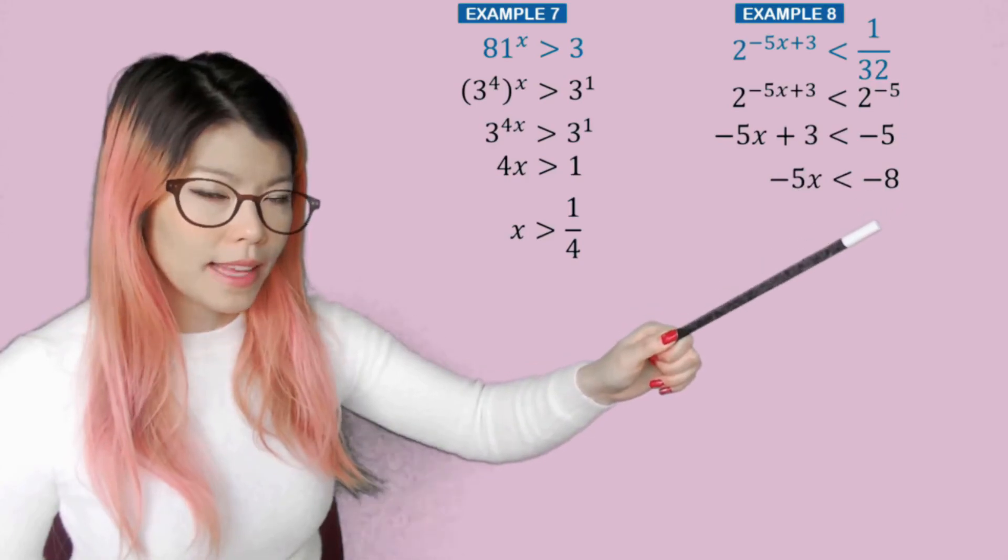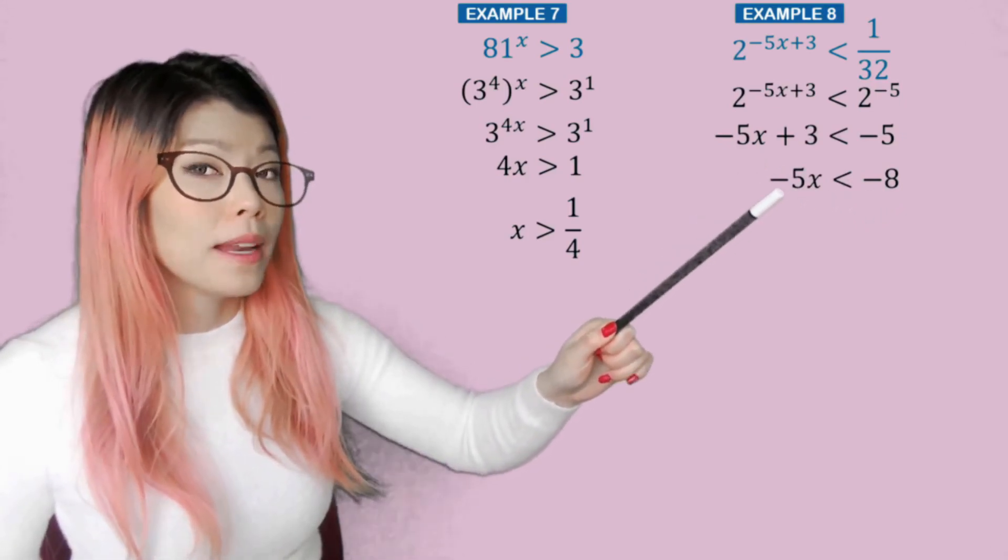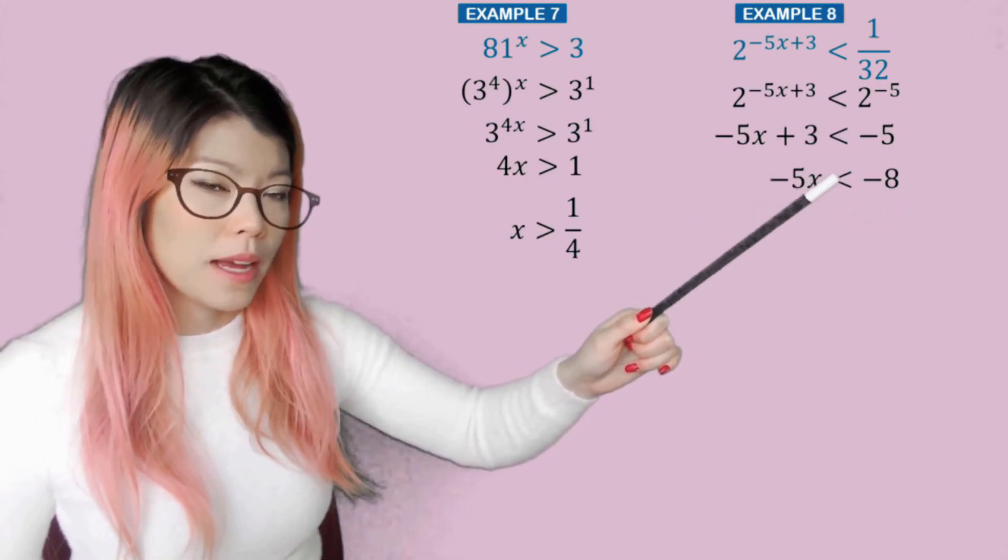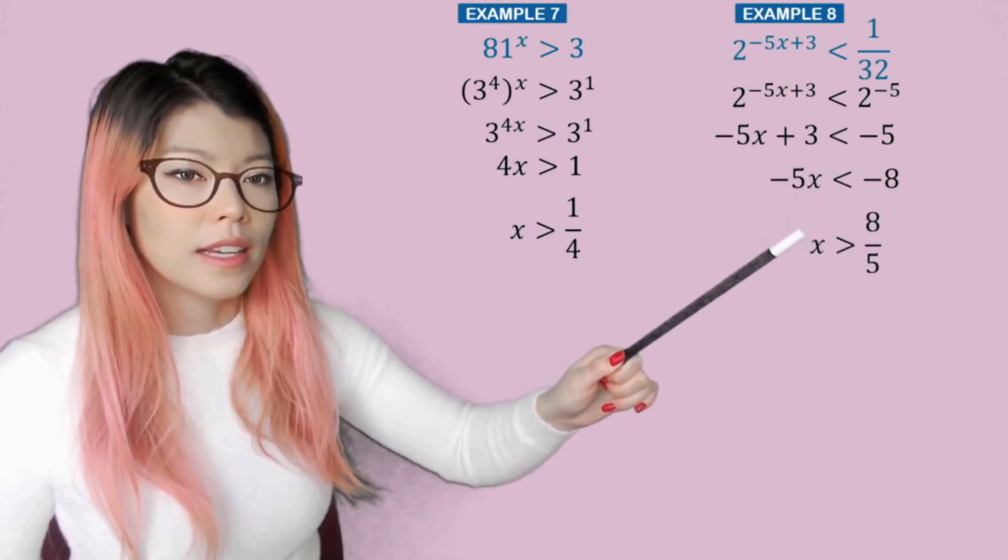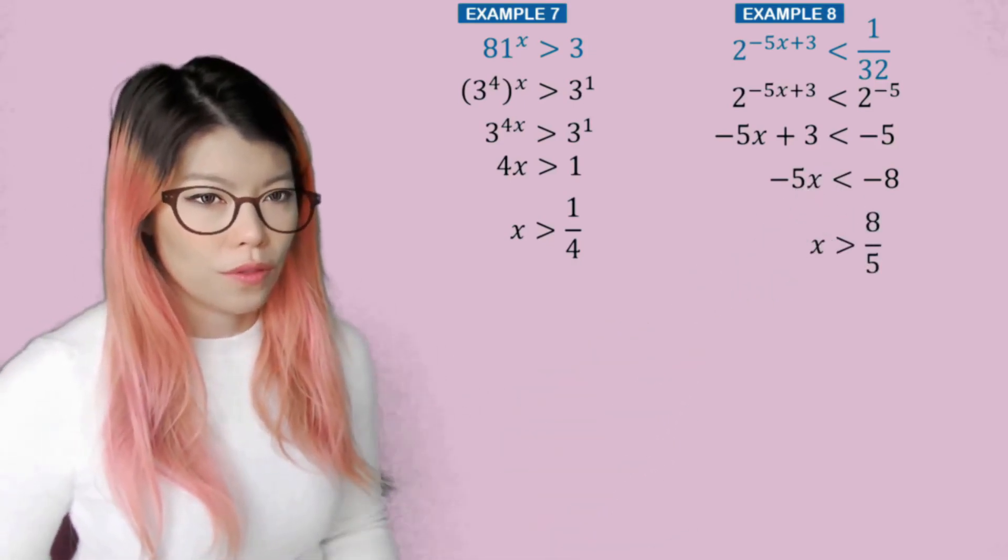And then dividing by negative 5, remember when we divide by negative, we have to change the sign. So it becomes x is greater than 8 over 5.